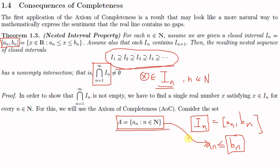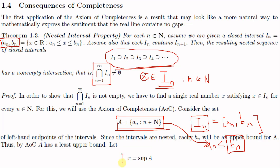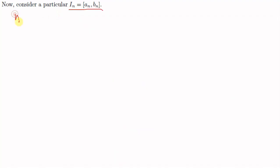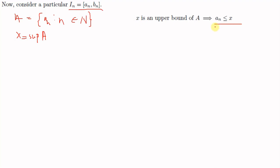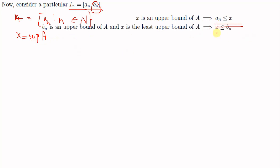Therefore, by the axiom of completeness, A has a least upper bound — a supremum. We denote that supremum by x, so let x = sup A. Since x is the supremum of A, x is an upper bound for A, giving us a_n ≤ x. Also, since every b_n is an upper bound for A and x is the least upper bound, we get x ≤ b_n. Combining both: a_n ≤ x ≤ b_n.